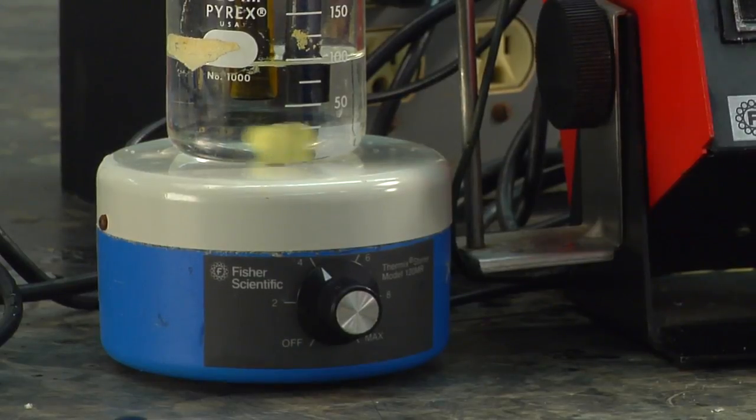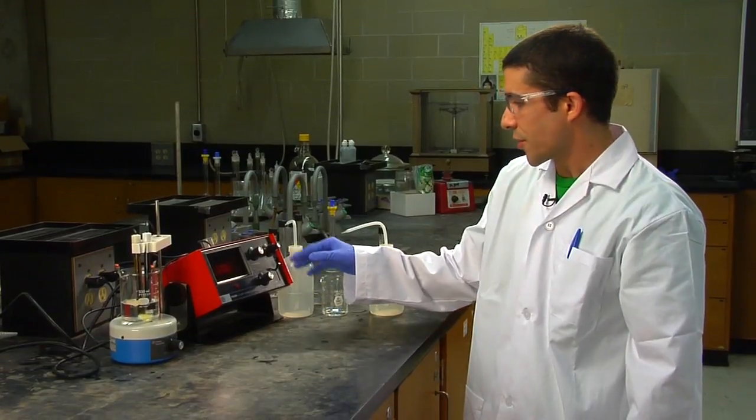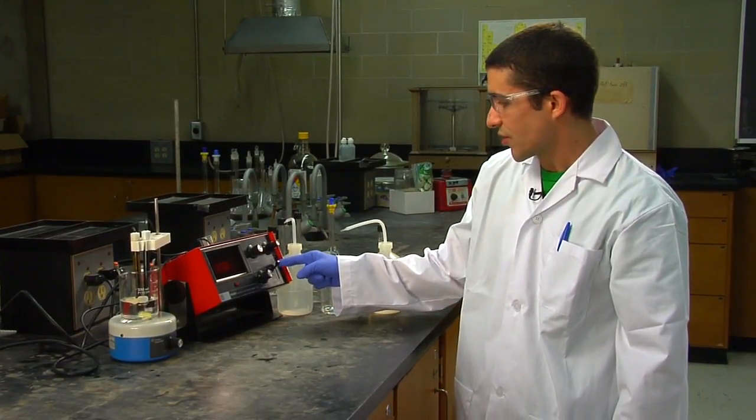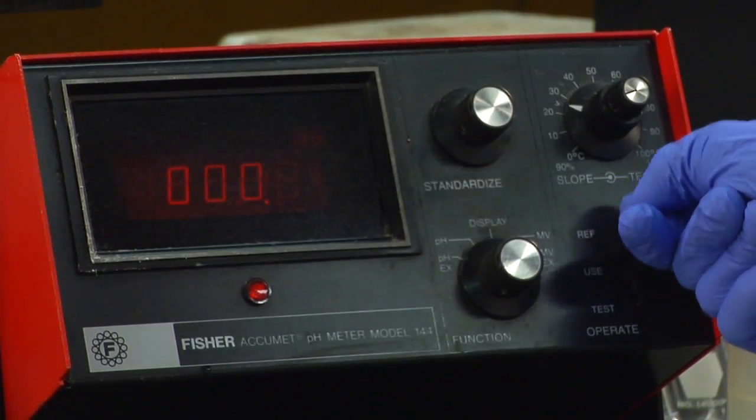You can turn on the magnetic stirrer to allow mixing to occur, and when you're ready to take a measurement, you can just turn this switch that is, right now it's on reference or standby, just flip it to use.